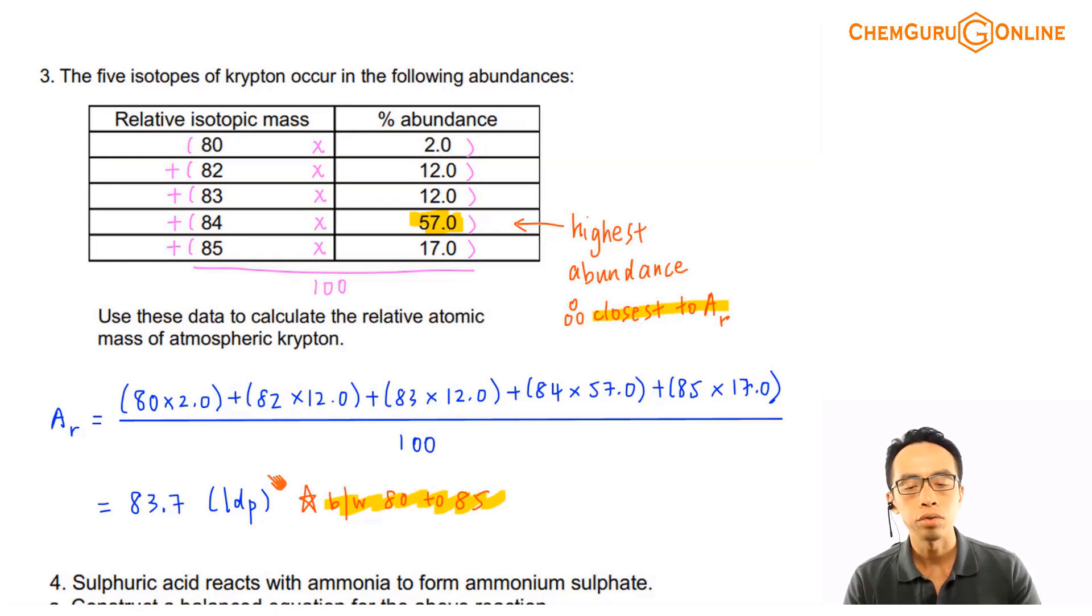Another thing that we can use is the weighted average. Since this is the weighted average, and you notice we have 57% of isotope 84, which means that more than half of the sample is isotope 84, Krypton-84.